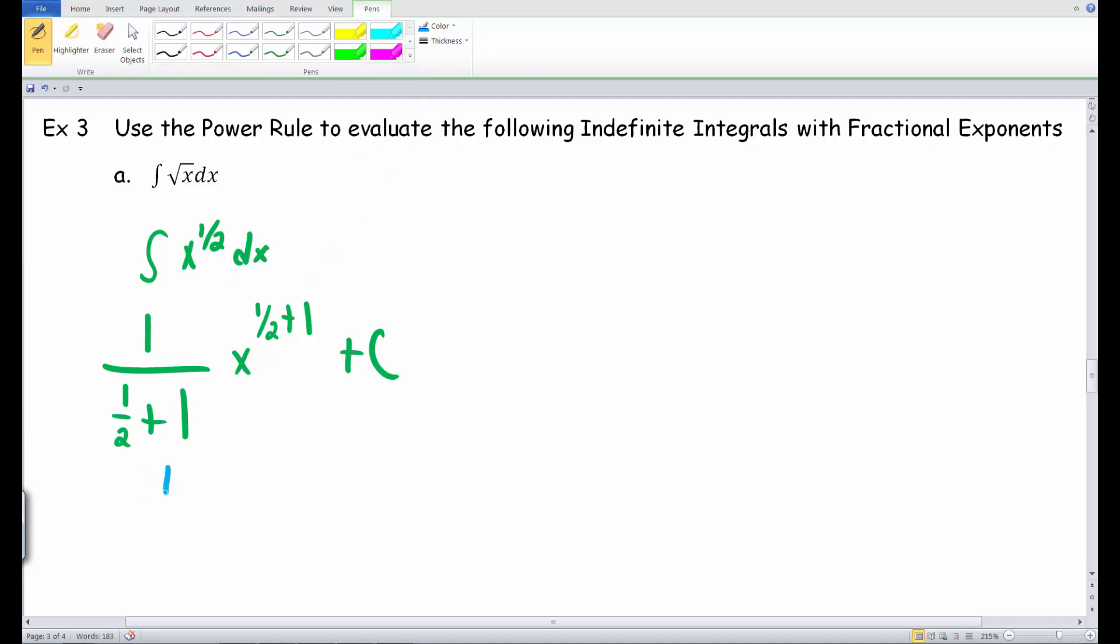When we simplify this up, we end up with 1 divided by half plus 1 is just 3 halves on the bottom, x raised to the 3 halves. That is the exponent. Still plus some constant.